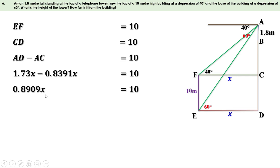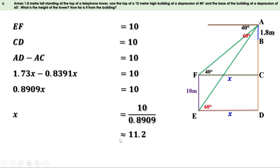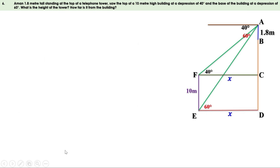To find x, we take 0.8909 to the other side: x equals 10 divided by 0.8909. Dividing, we get approximately 11.2. Now let us find AD. AD equals 1.73x and x is 11.2, so AD equals 1.73 times 11.2. Multiplying, we get 19.376.